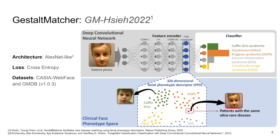The predecessor to our work was GestaltMatcher by Shi et al. Though their work was modern in the field of genetics, there are some methods that are outdated, such as the AlexNet-like model architecture from 2012, or a lack of contrastive loss.